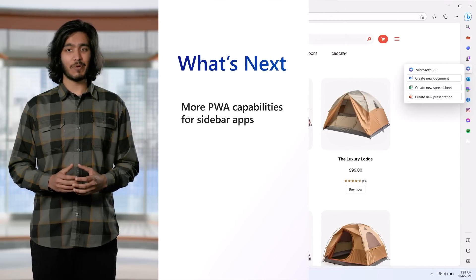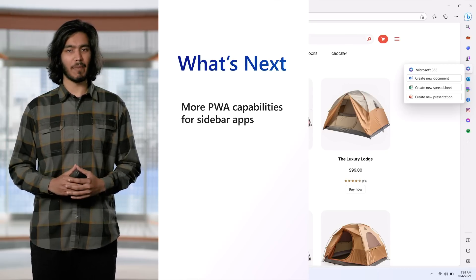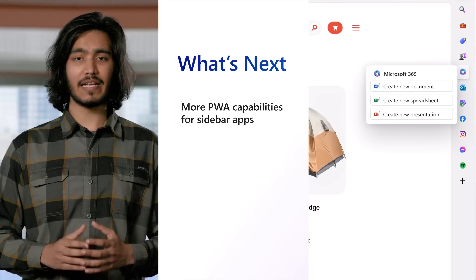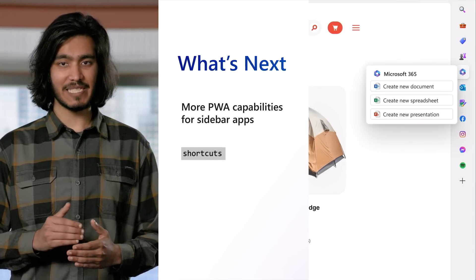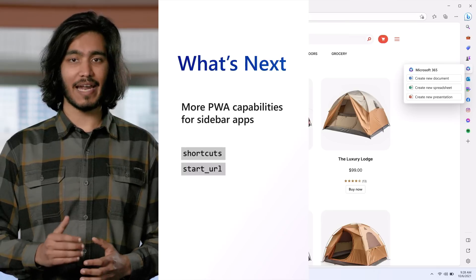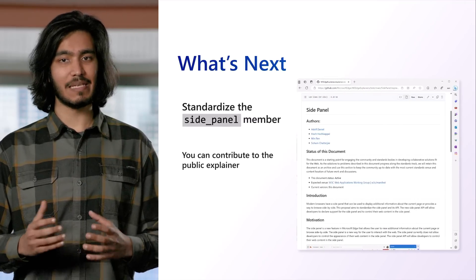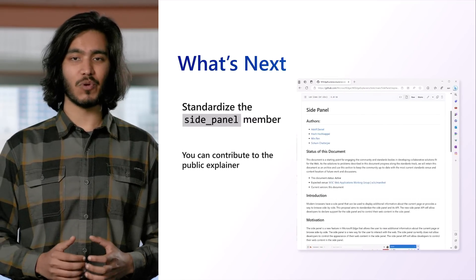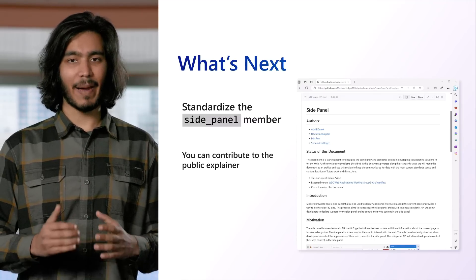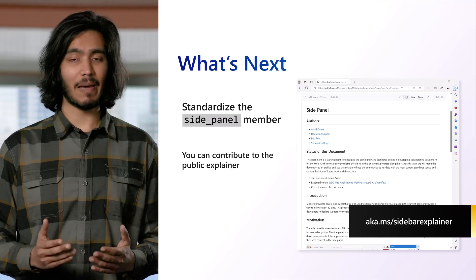The sidebar is a new interface that we expect will empower you to build for the web in new ways, and we envision these apps being able to do much more in the coming months. For instance, we're investigating ways to map existing PWA features to the sidebar, including app shortcuts that allow you to quick launch to a specific page or action within your app, a dedicated start URL property that will allow you to define a custom landing page for the sidebar, and a richer notification system. We also hope to standardize support across similar sidebar interfaces by collaborating with browser vendors and the broader web community. While the Edge side panel member is implemented for Microsoft Edge only at present, we're designing this feature via a public explainer where we welcome your collaboration and feedback.